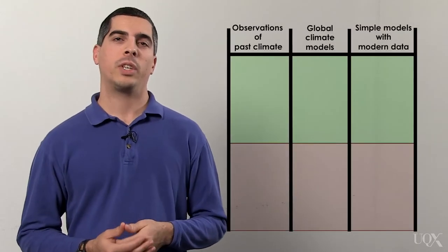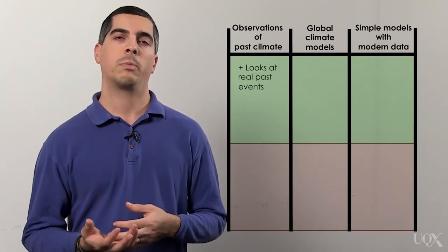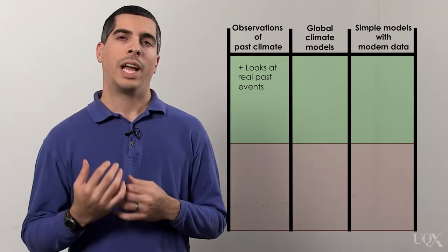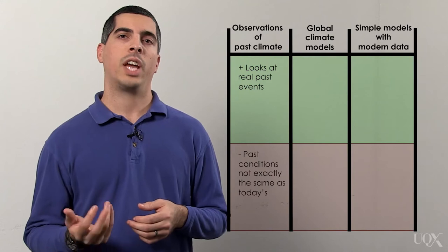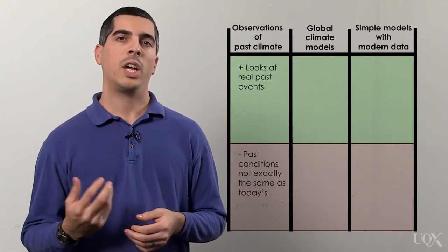Each method has its strengths and weaknesses. The strength of looking at past climate change is that it gives us estimates based on actual past events in Earth's history. However, the weakness is that these changes happened under conditions that aren't identical to today's climate, so they're not perfect analogs.